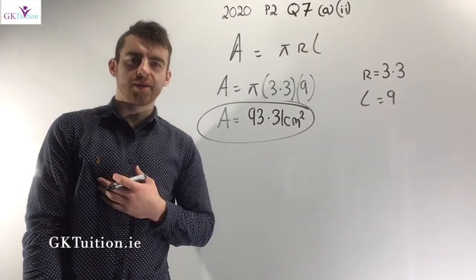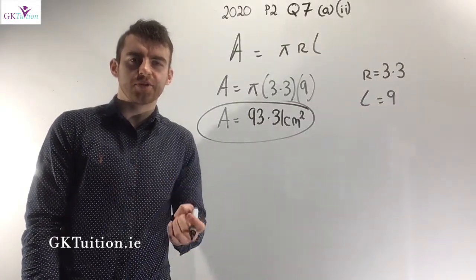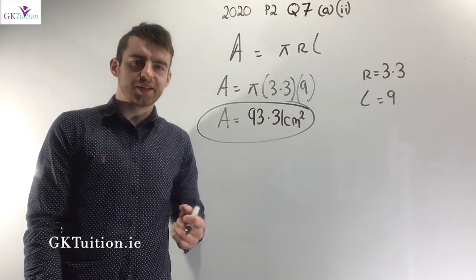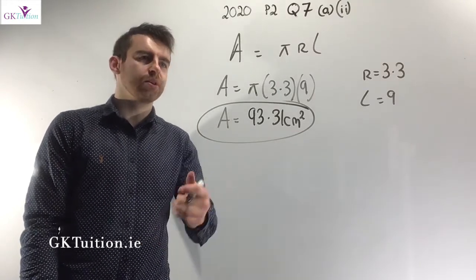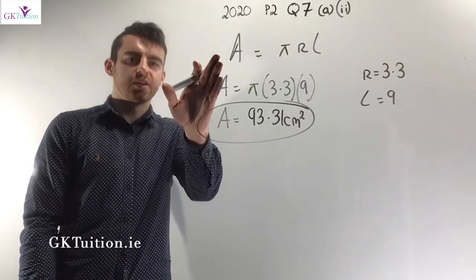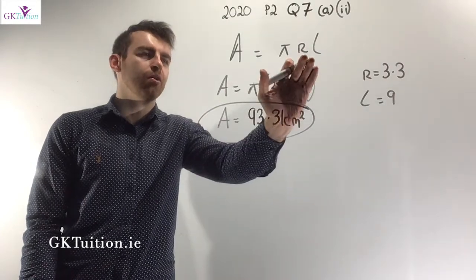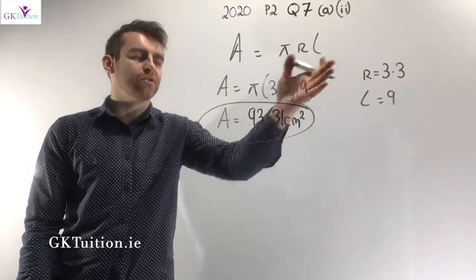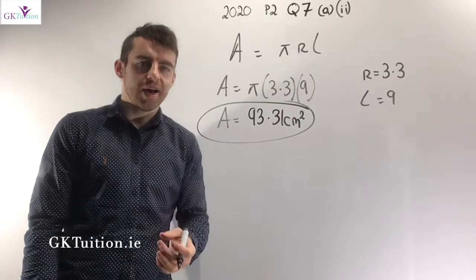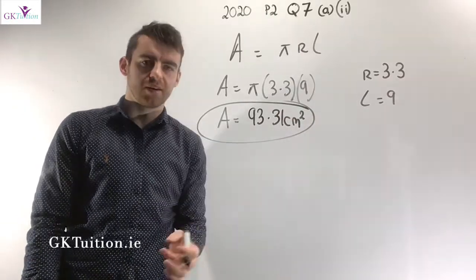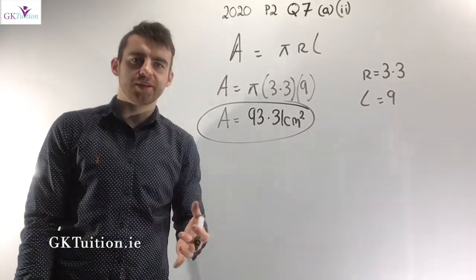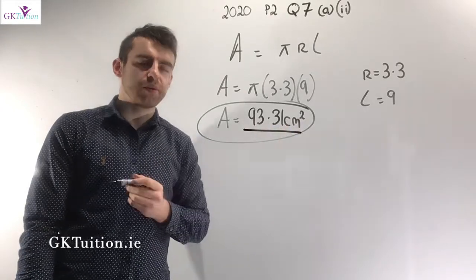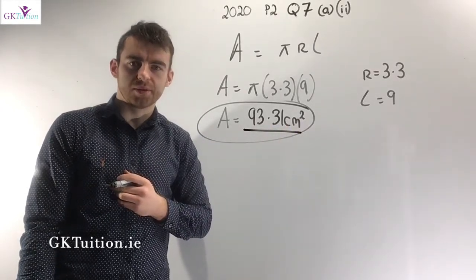In the second part of the question we're asked to work out the curved surface area of the cone. Page 10 in your maths tables gives the formula: curved surface area equals π r L, where r is the radius (3.3) and L is the slant height (9). Plugging into your calculator gives 93.31 centimetres squared to two decimal places.